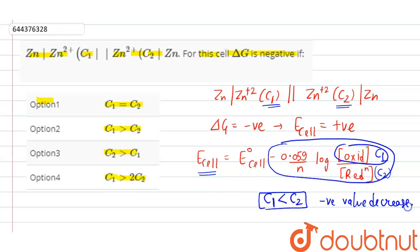If this negative value will be decreased, negative value decreases, this will make E cell value as highly positive.